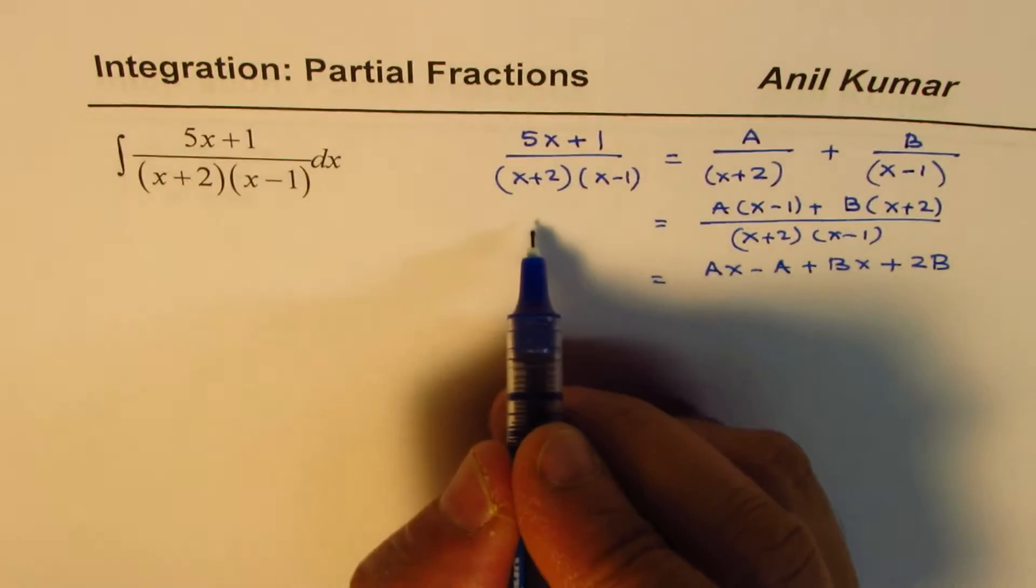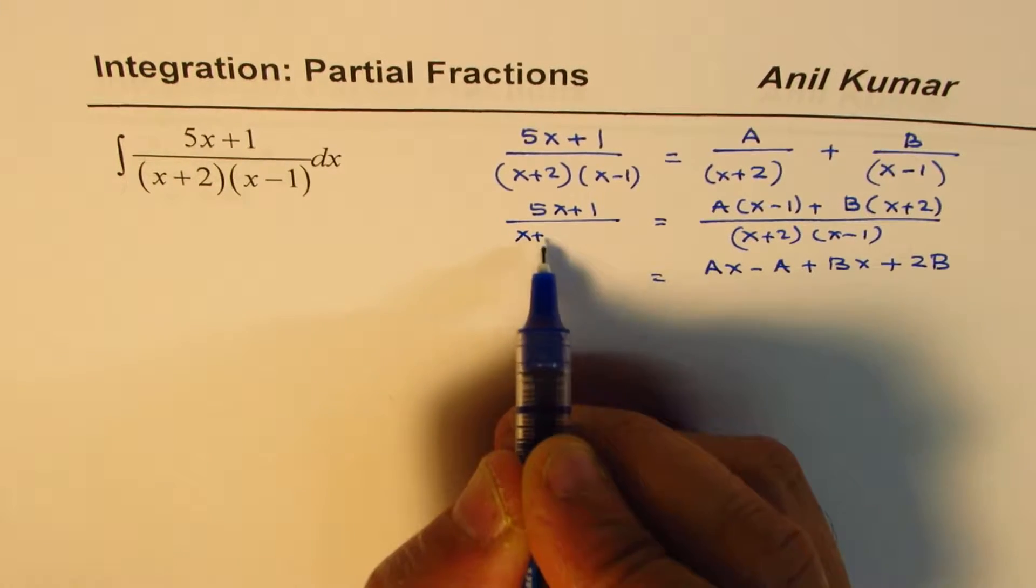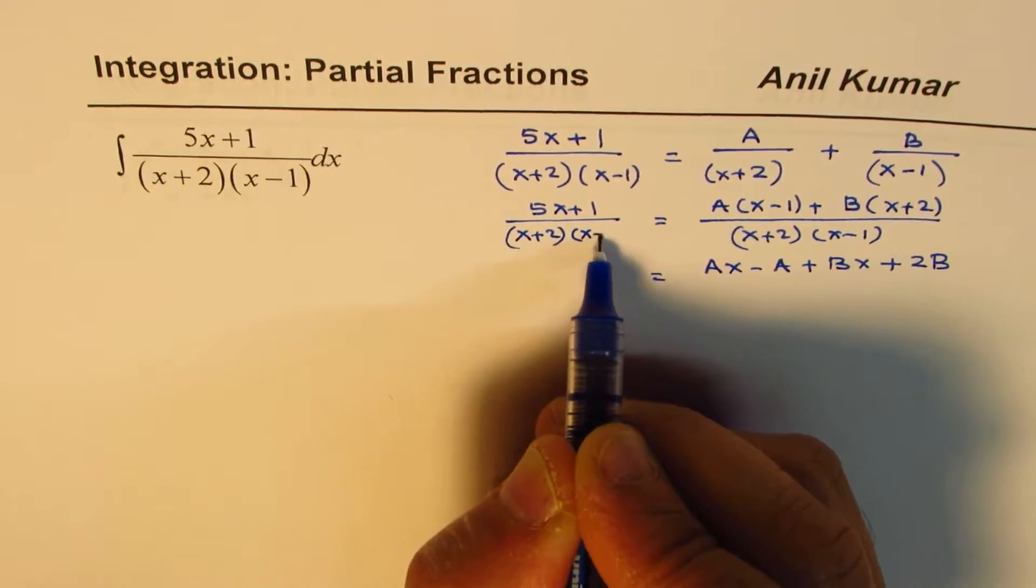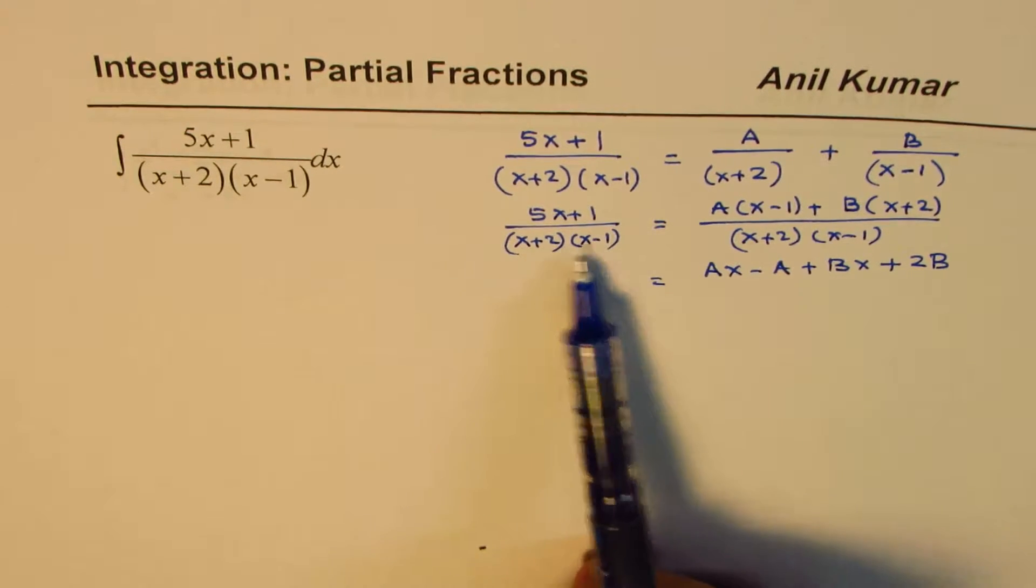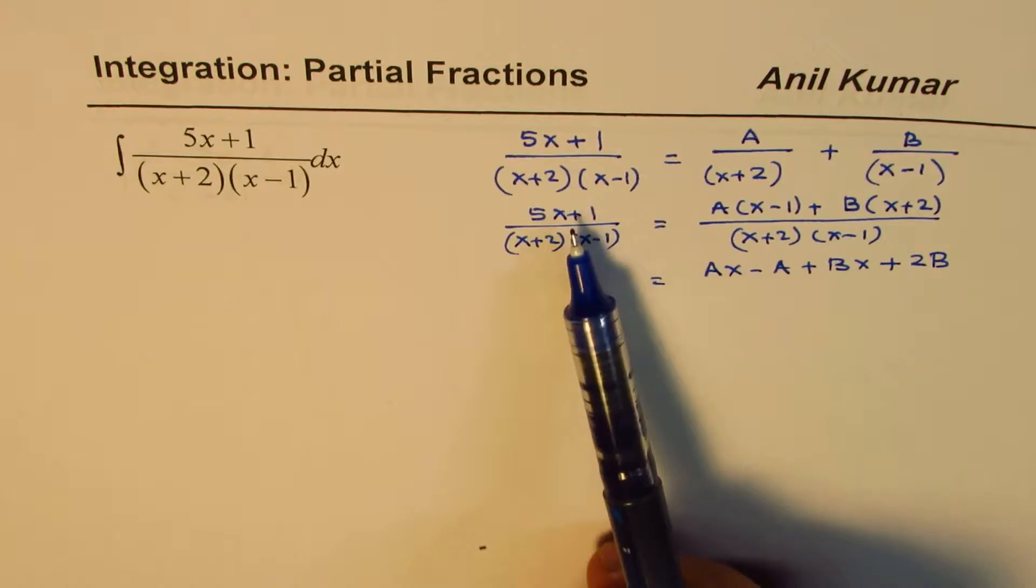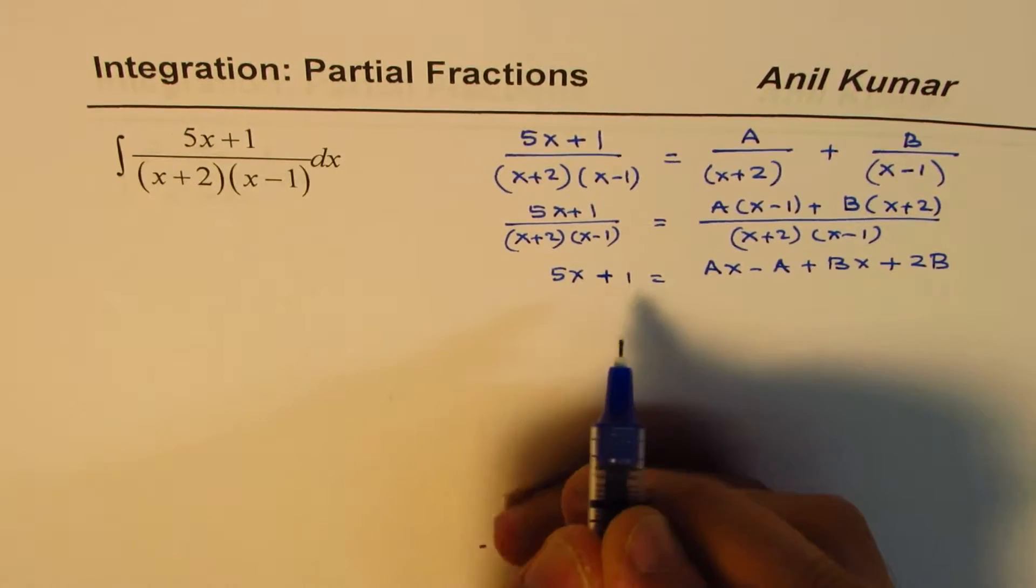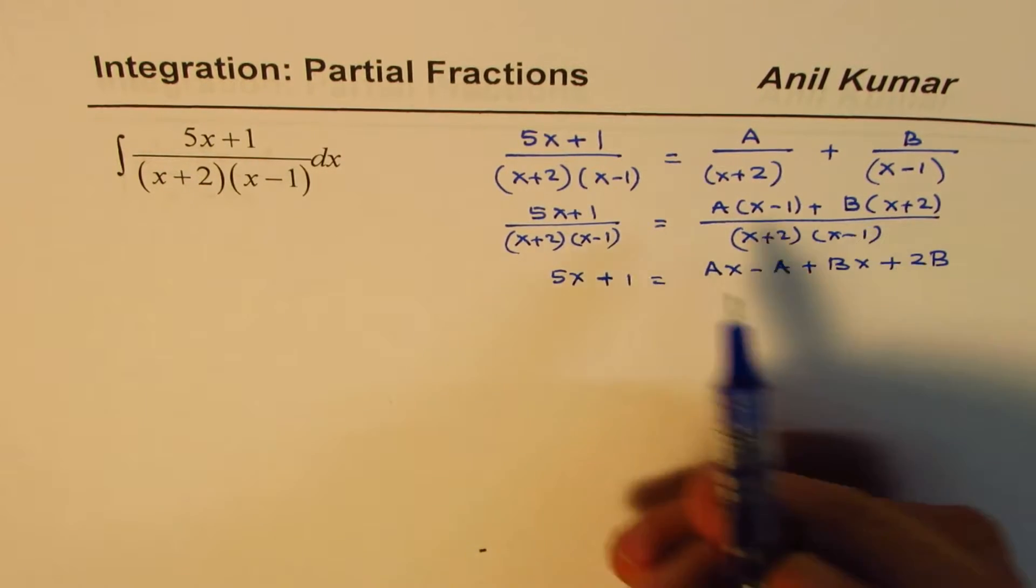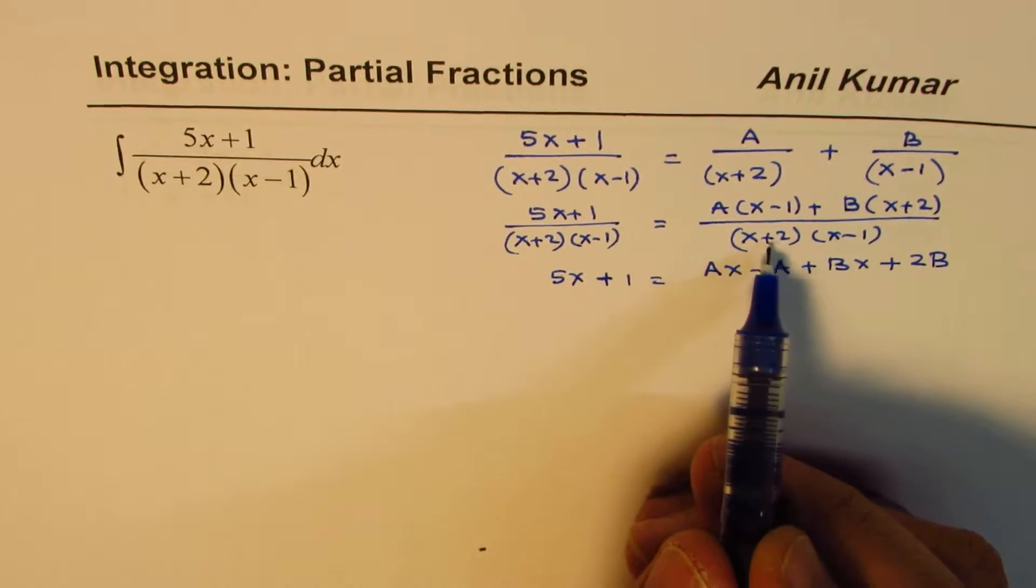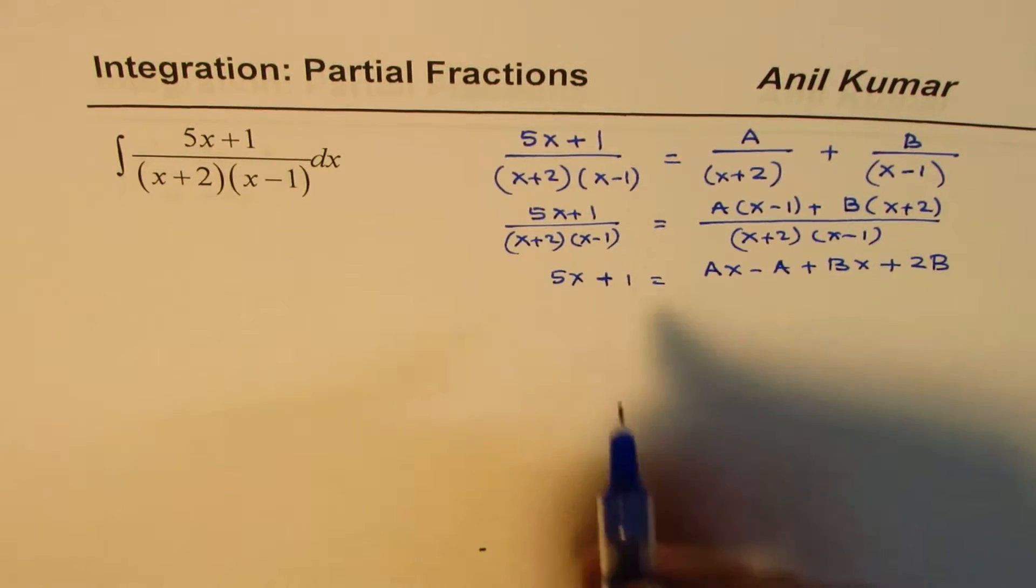On the left side, let me write here 5x plus 1 divided by x plus 2 times x minus 1. Now, at this stage, you can see that denominators are exactly same, so numerators should also be same. So we could write this as 1. So their numerator should be exactly same. Think as if we have multiplied by x plus 2 x minus 1 on both the sides, so they get cancelled off.